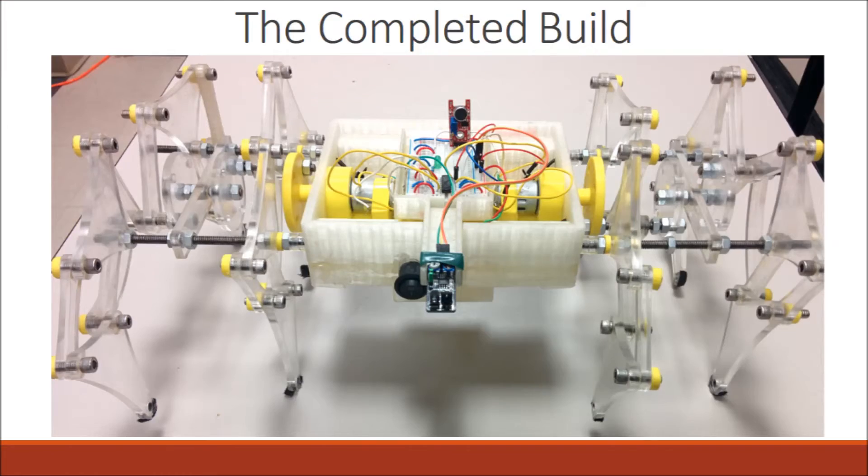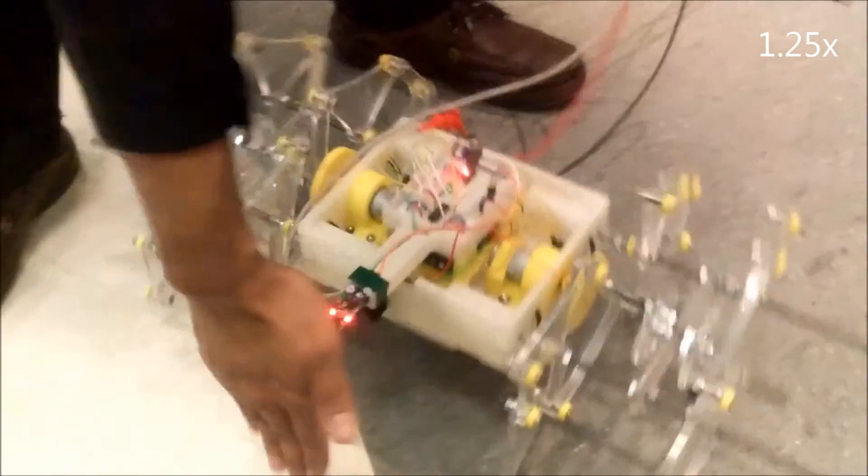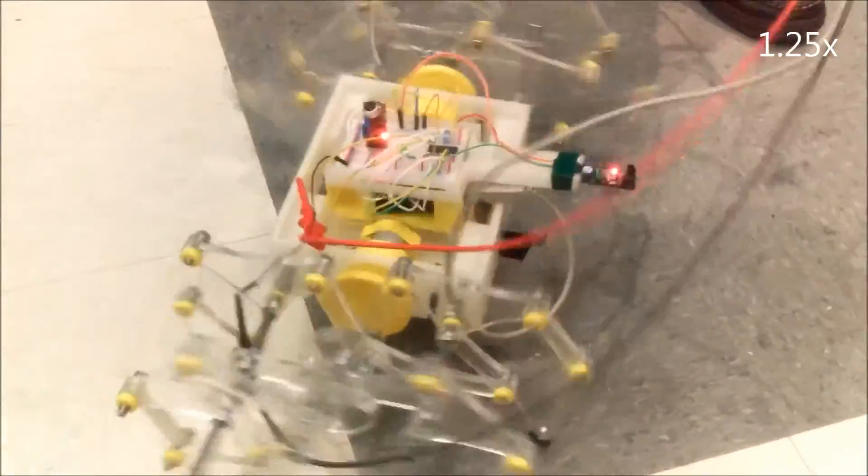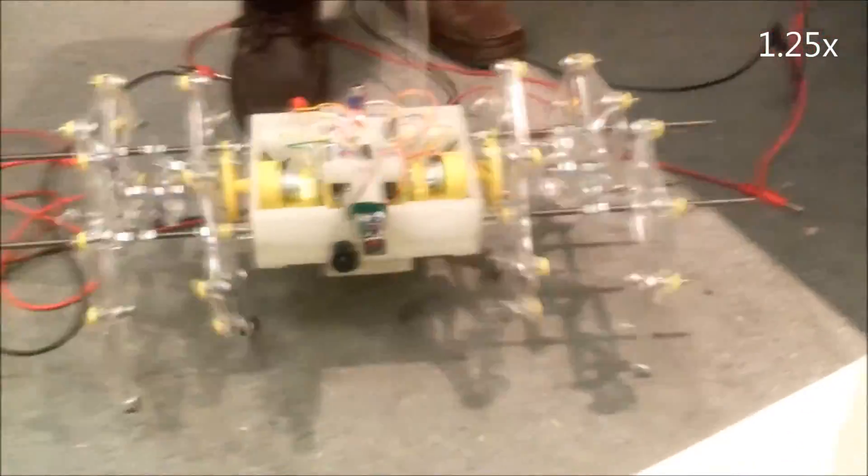This is the completed robot. This video shows the first test run of the robot. The wires are for powering the robot, as suitable batteries were not available at the time of filming.